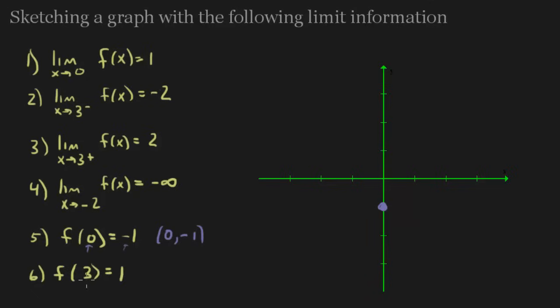Alright, next one is f of 3 equals 1, so that makes the point 3, comma 1. So let's go ahead and plot that, that puts me right there. Now because those are actual real function values, they're given closed dots.